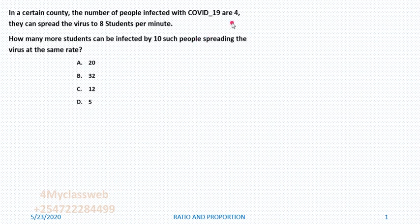From this question, we had four people who are already sick and they could infect 8 students per minute. Now these four people increased to 10, and therefore you should expect that with more people who are sick, they are going to infect more people.